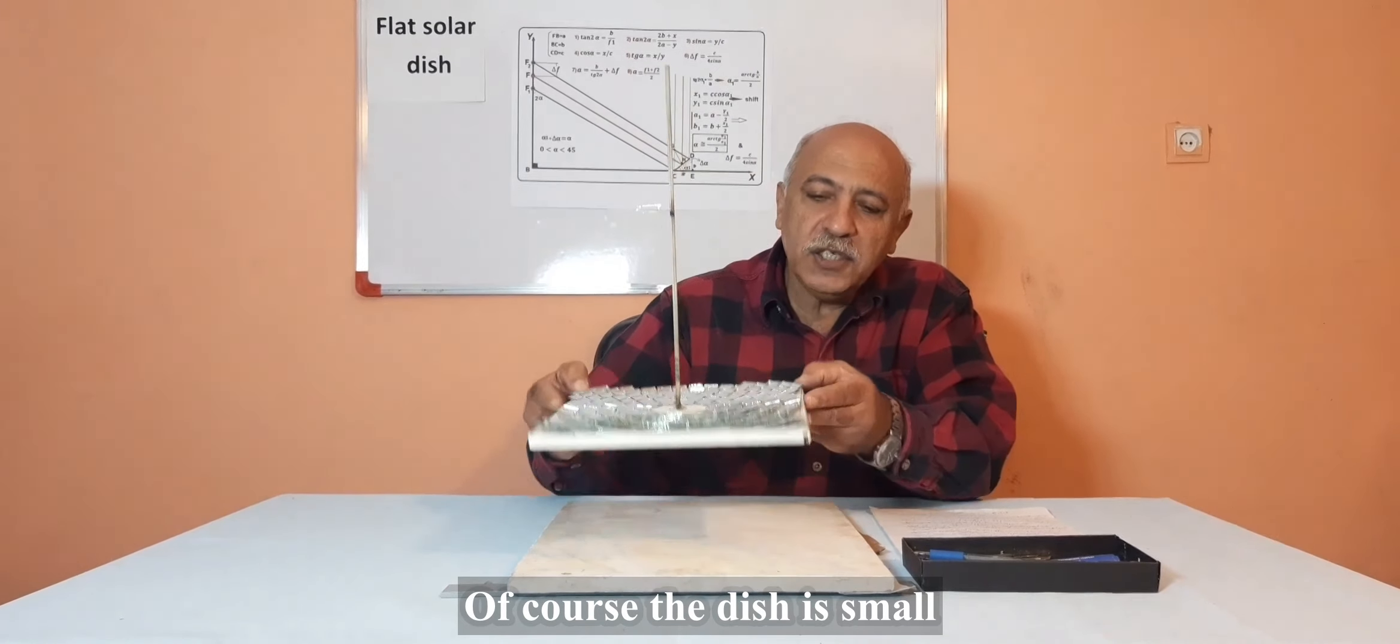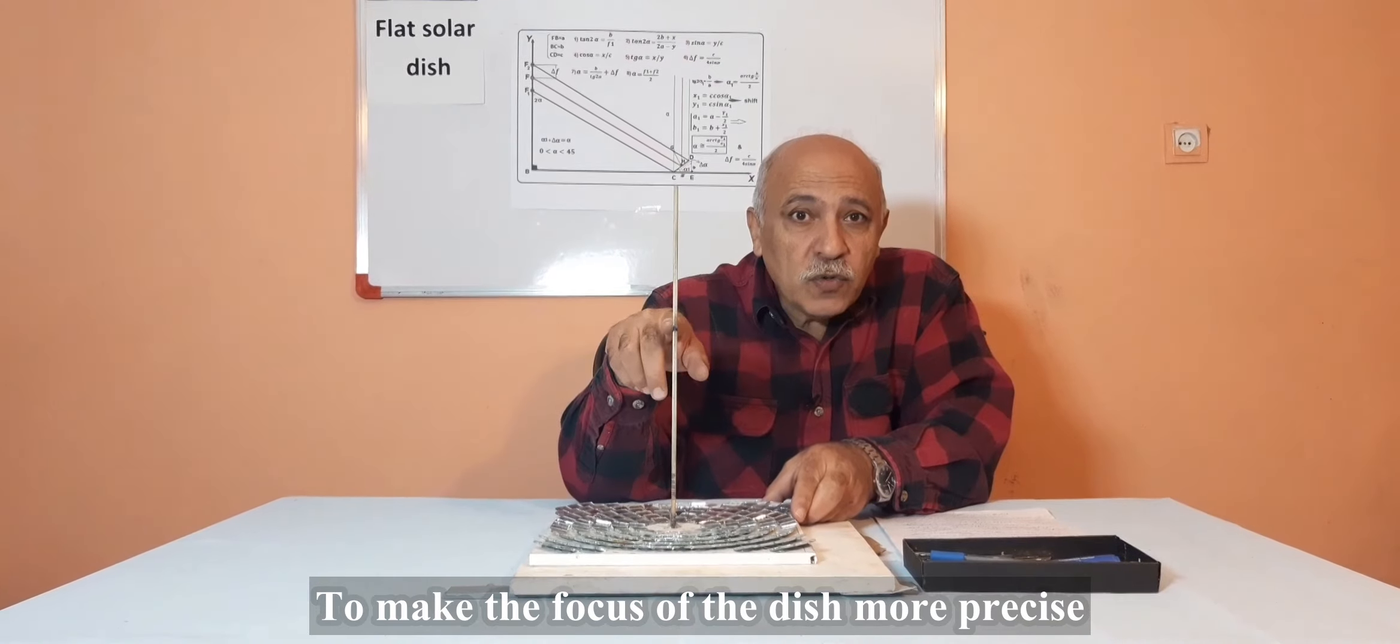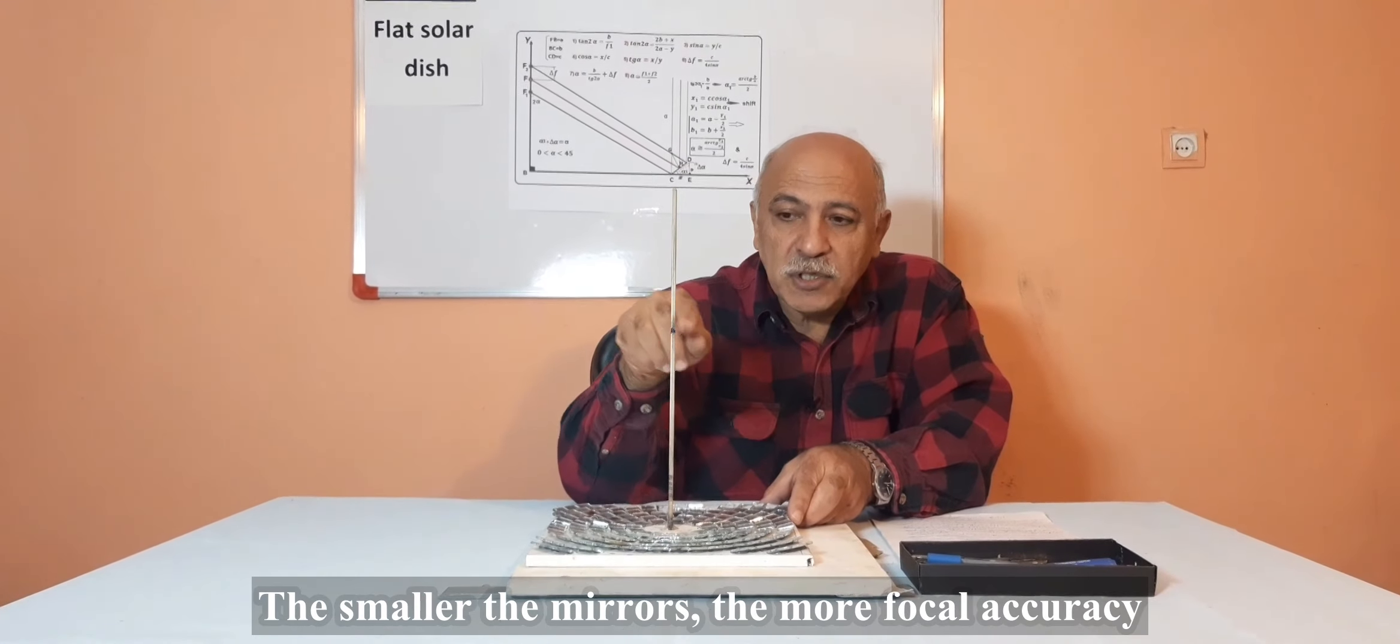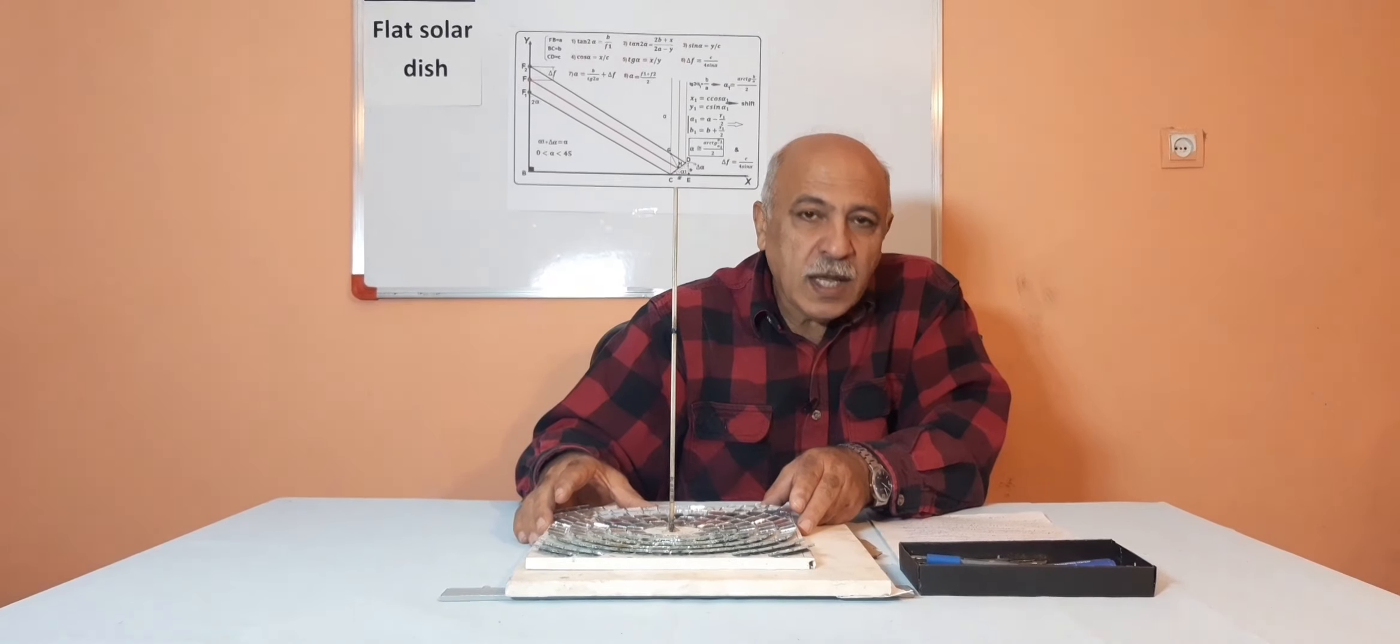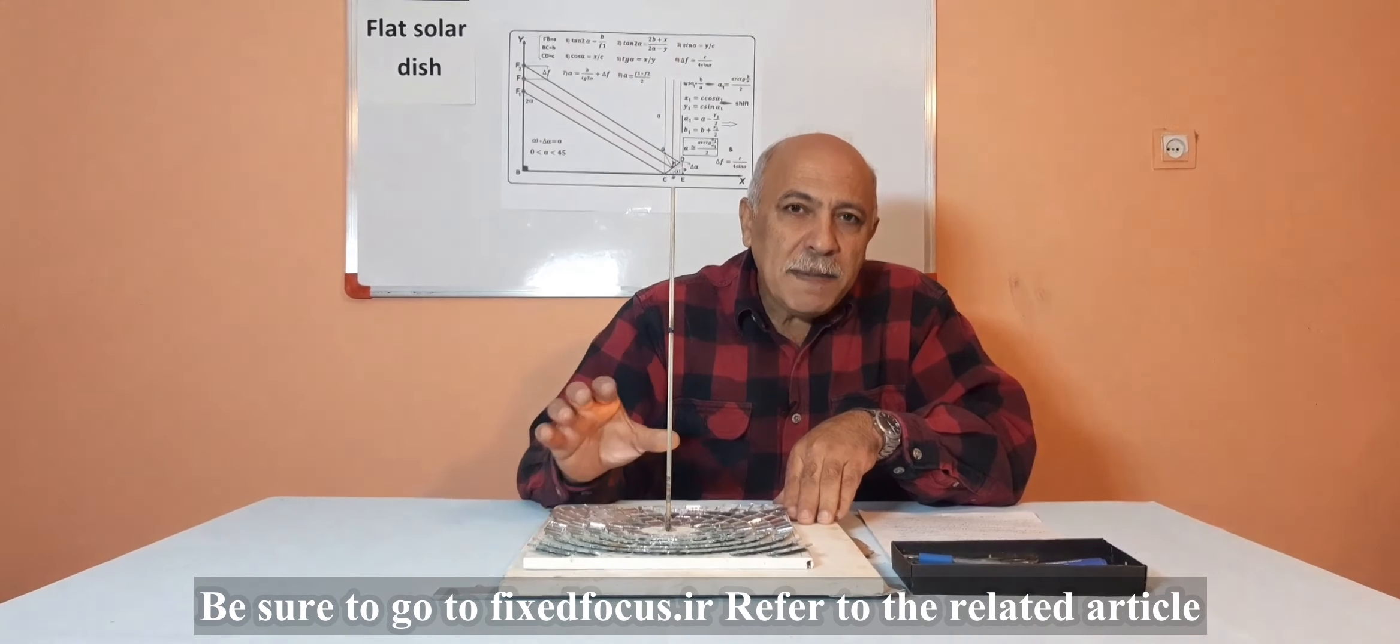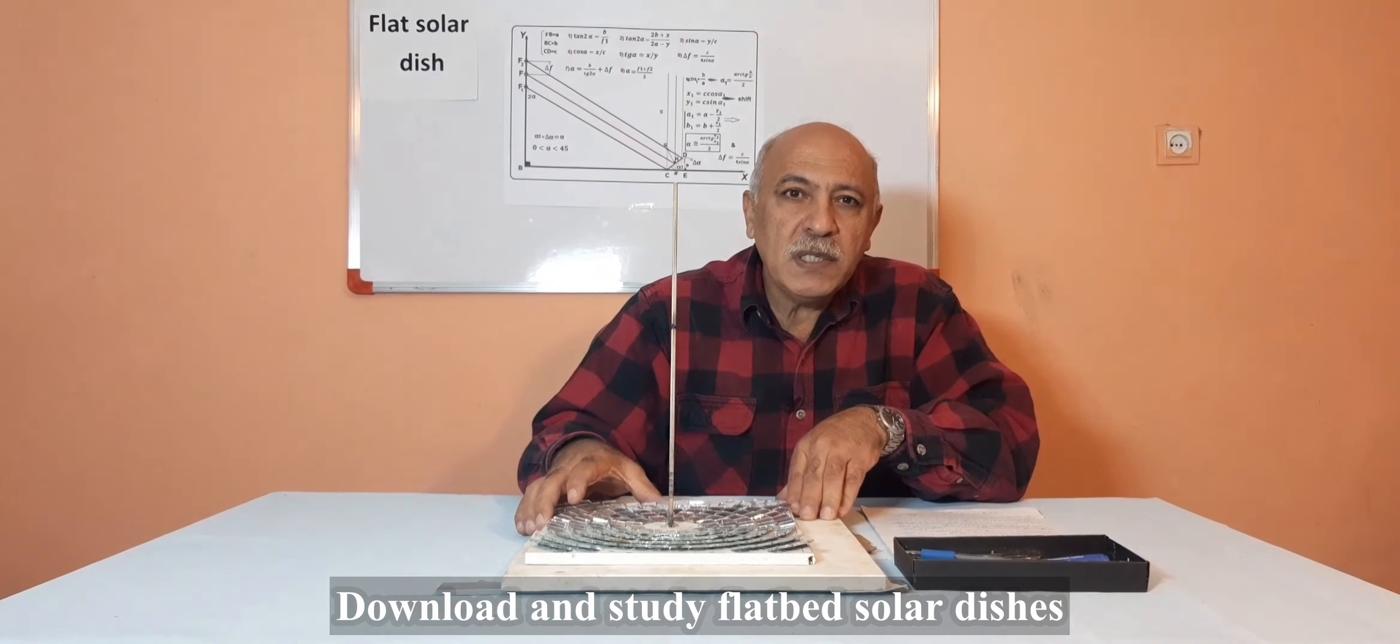We saw the dish in the sun. Of course the dish is small. To make the focus of the dish more precise, we have to glue the mirrors carefully and use smaller mirrors. The smaller the mirrors, the more focal accuracy. For students and all who intend to make bigger dishes this way, be sure to go to fixedfocus.ir, refer to the related article, download and study flat solar dishes.